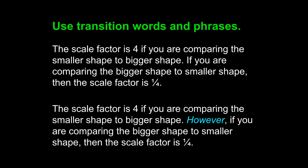If we use a simple word like however, we can show the contrast between these two ideas. The scale factor is 4 if you are comparing the smaller shape to bigger shape. However, if you are comparing the bigger shape to smaller shape, then the scale factor is 1 to 4. The simple word 'however' is powerful — it shows the difference between the two sentences.